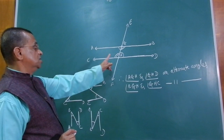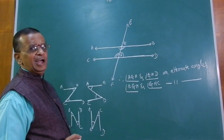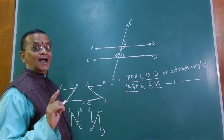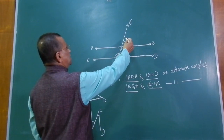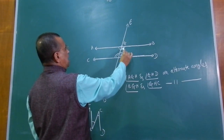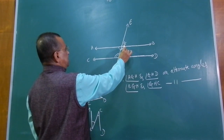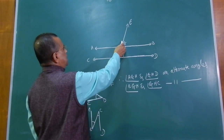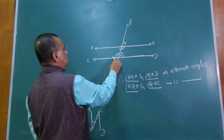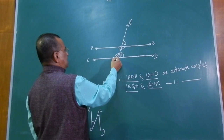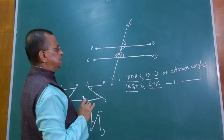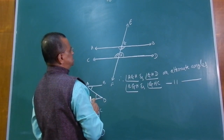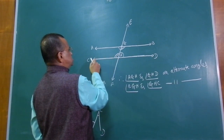In the main diagram, you must be able to identify corresponding angles, alternate angles, vertically opposite angles, and adjacent angles. Corresponding angles: angle EGB and angle GHD; angle BGH and angle DHF; angle EGA and angle GHC. Alternate angles: angle AGH and angle GHD; angle BGH and angle GHC.